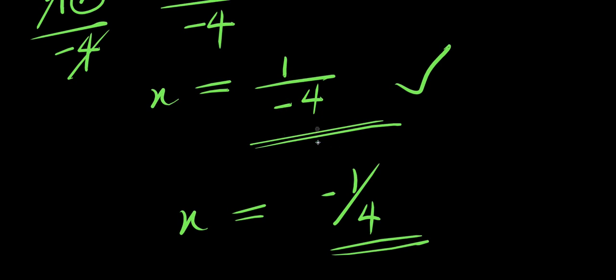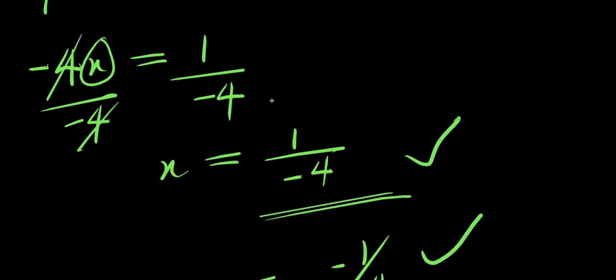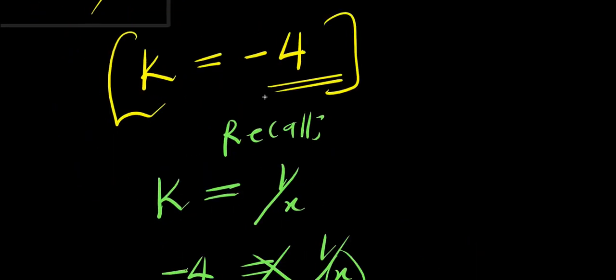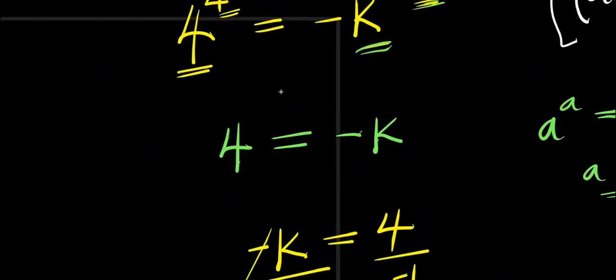1 over negative 4 is the same thing as negative 1 over 4. So this becomes our answer: x equals negative 1 over 4.